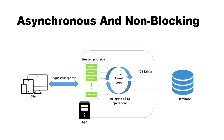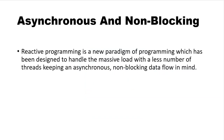Before going to the database, the thread goes to an event loop. The event loop mainly contains three methods: onNext, onComplete, and onError, which we will discuss in depth in later videos. The event loop accepts the request from the thread and sends it to the database. The key advantage is that the thread does not wait for a response. Instead, it sends an event to the database informing it that it is not waiting anymore — when the database completes its job, it can return the response to any available thread. This way, we can process many requests simultaneously with a limited thread pool.